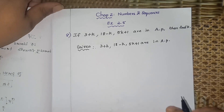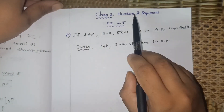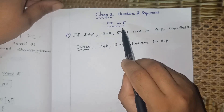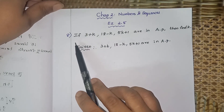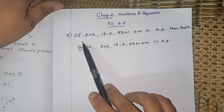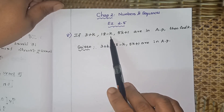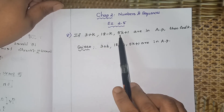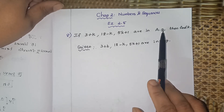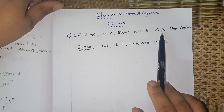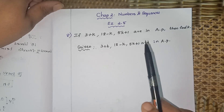Welcome to Lawmax channel children. Today we are going to see Chapter 2, Numbers and Sequences, Exercise 2.5, Sum 8 — an important sum. If (3+k), (18-k), (5k+1) are in AP, find the value of k.